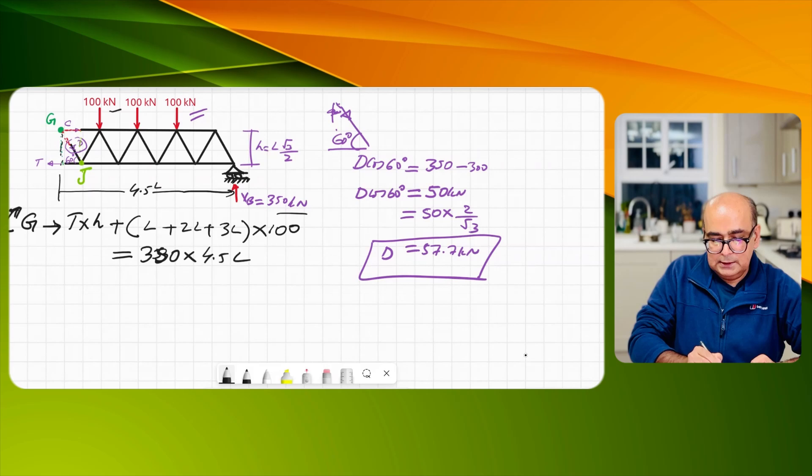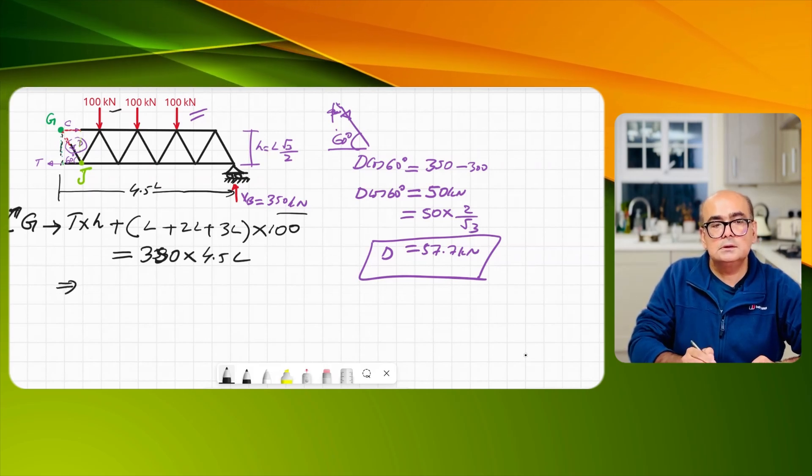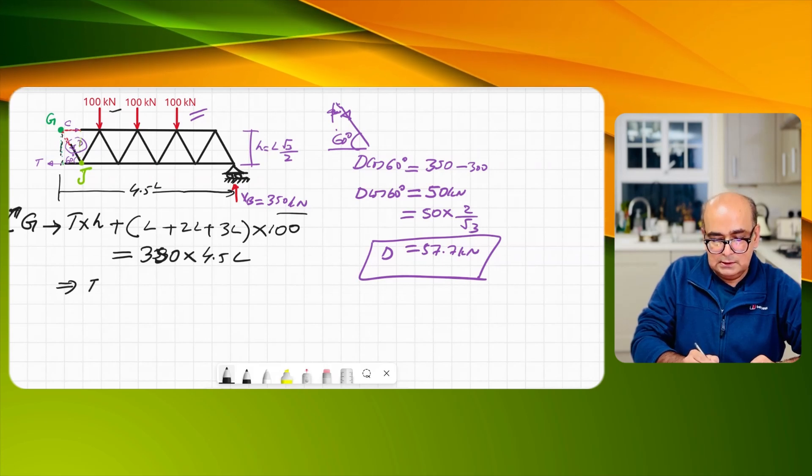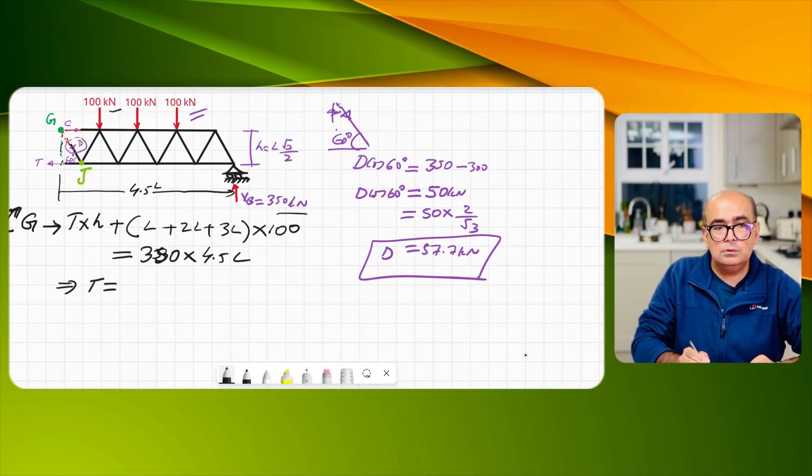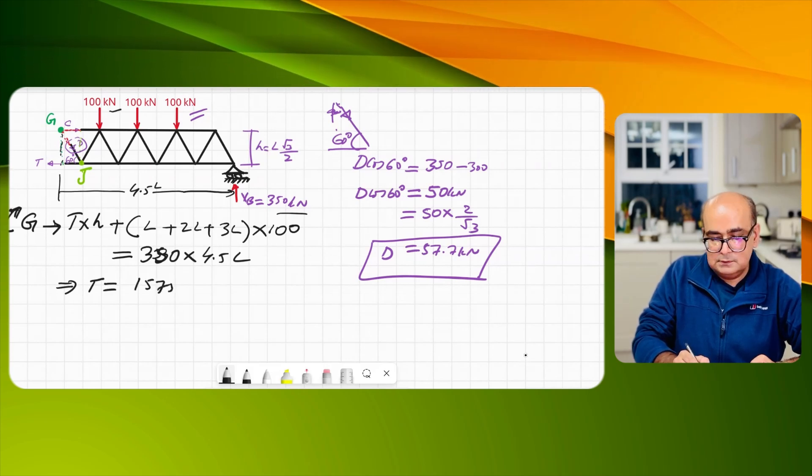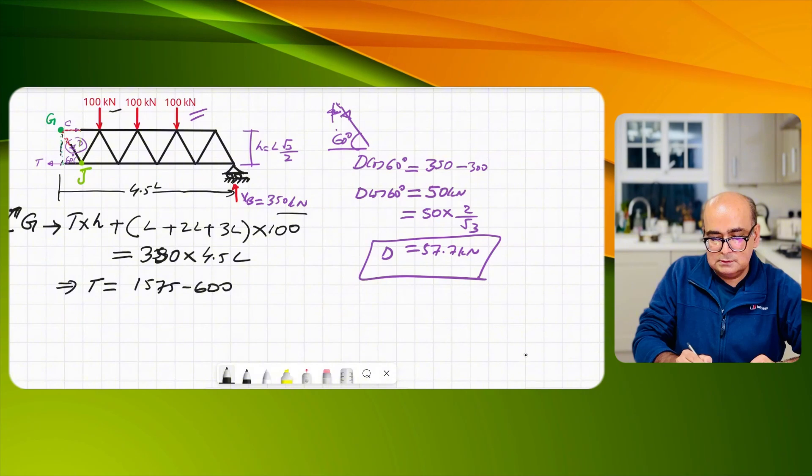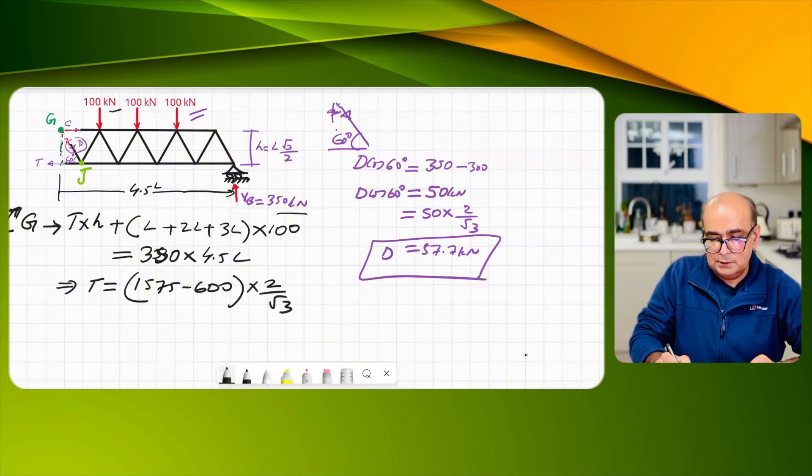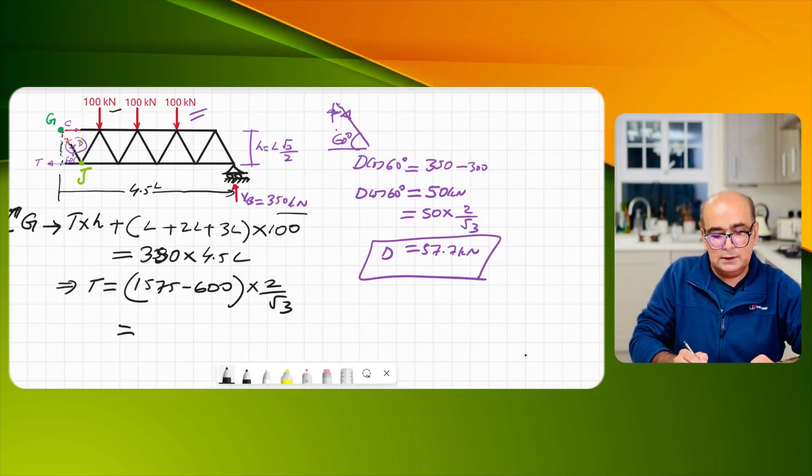And if you simplify this you will get value of T as equal to 1575 minus 600 times 2 over √3, and if you simplify this further you will get 1126 kN.